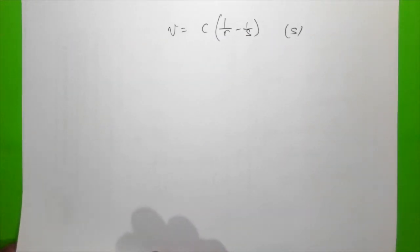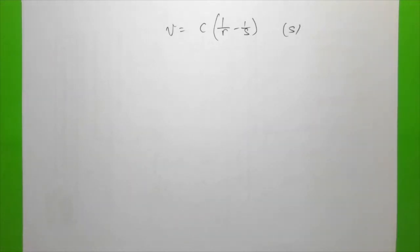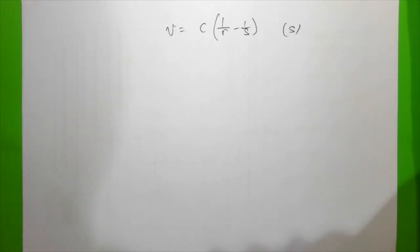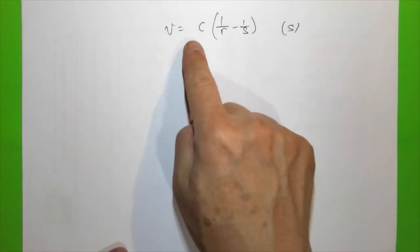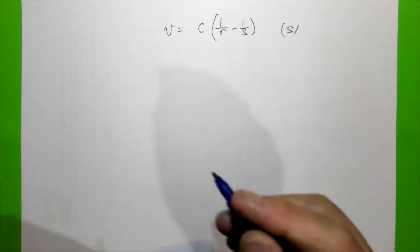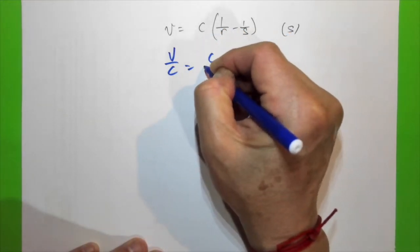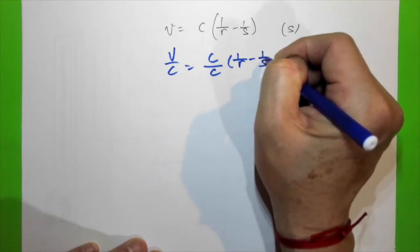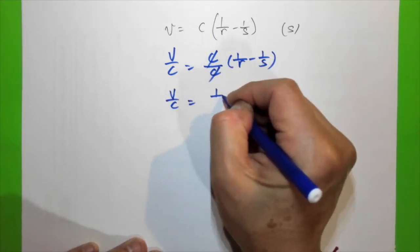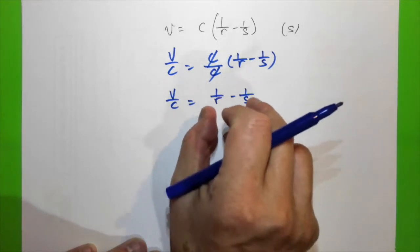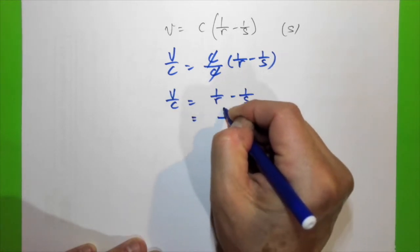The final example: rearrange the formula so that s is the subject. First I eliminate c by dividing both sides by c, giving v/c = 1 − r/s. Rewriting the right-hand side with common denominator rs: v/c = (s − r) over rs.